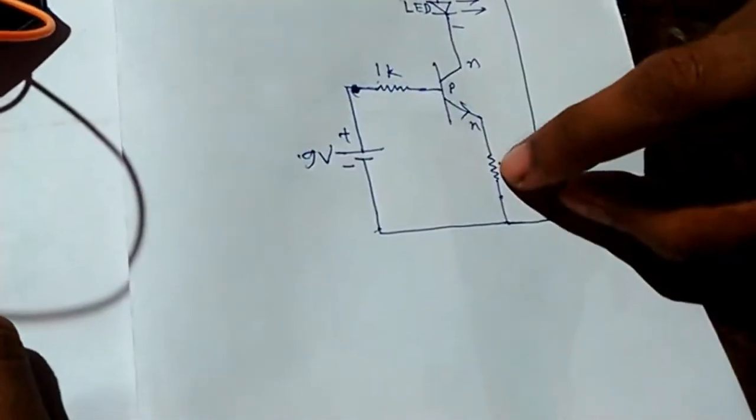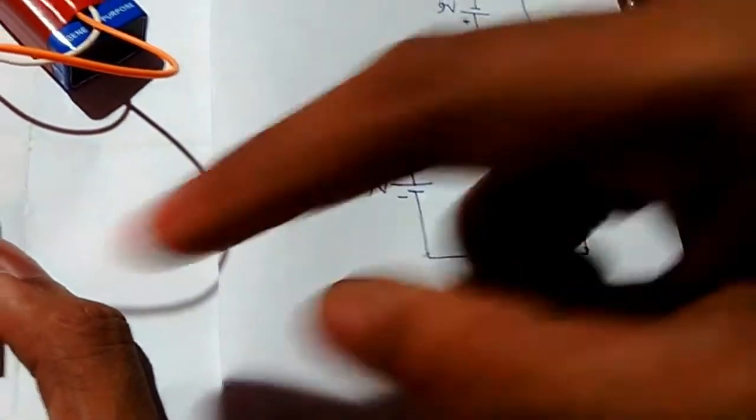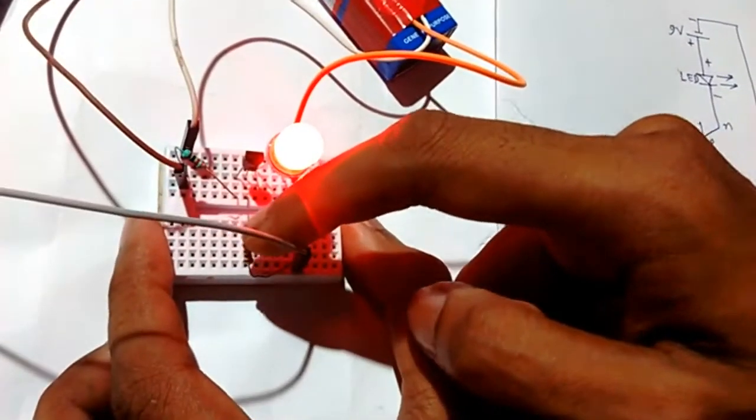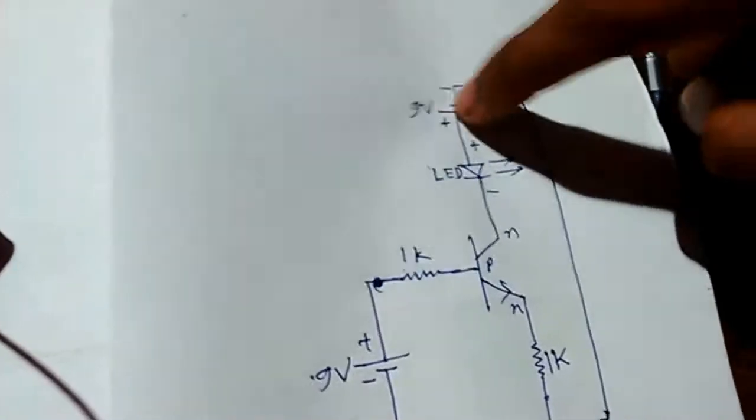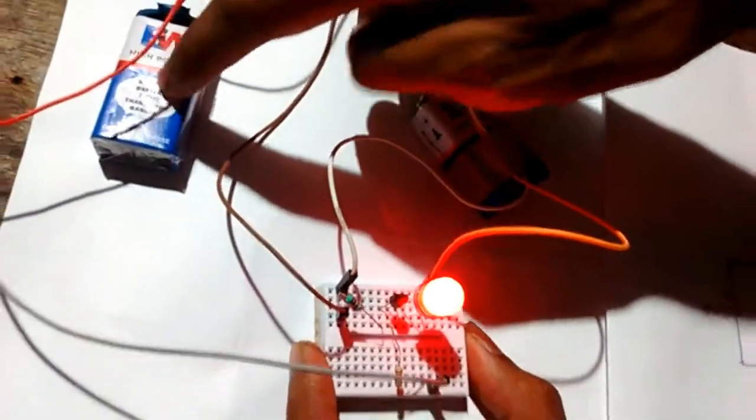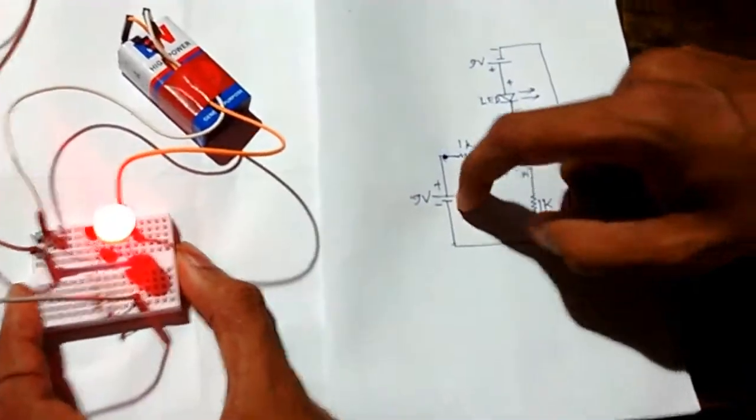This is a 1k resistance here, and this is another 1k resistance for the base terminal. And this is a 9 volt battery here, and this is another 9 volt battery.